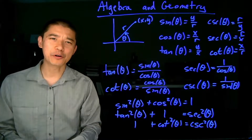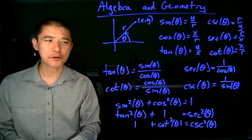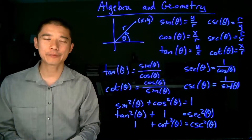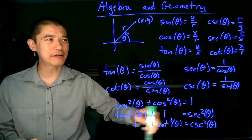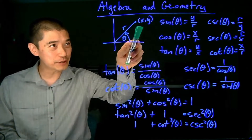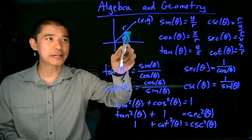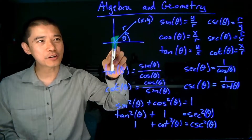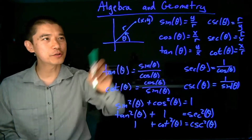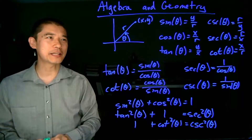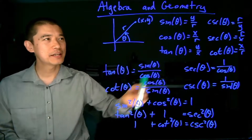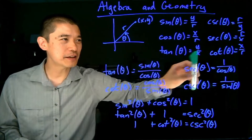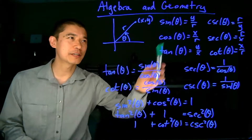We're going to do a quick review of all of the algebra and all of the geometry of the trigonometric functions. We start off with a point xy on the plane that's not the origin, we have a distance r from the origin to that point, and we have an angle theta that this creates. That gives us the six basic definitions for trigonometric functions.